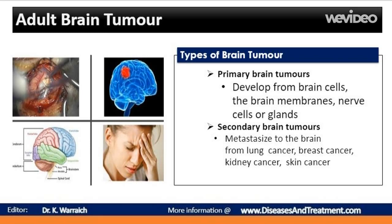Primary tumors can be benign or cancerous. In adults, the most common types of brain tumors are gliomas and meningiomas. Secondary brain tumors make up the majority of brain cancers. They start in one part of the body and spread, or metastasize, to the brain. The following can metastasize to the brain: lung cancer, breast cancer, kidney cancer, and skin cancer. Secondary brain tumors are always malignant. Benign tumors don't spread from one part of your body to another.